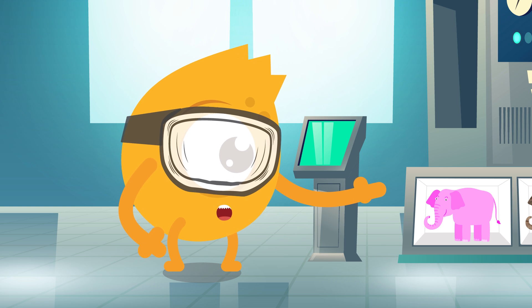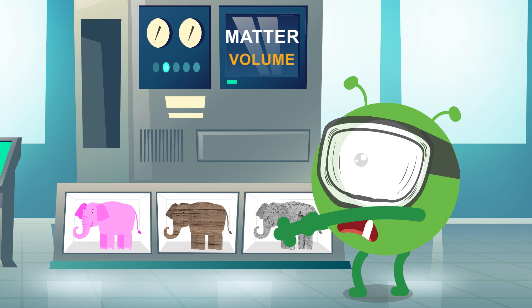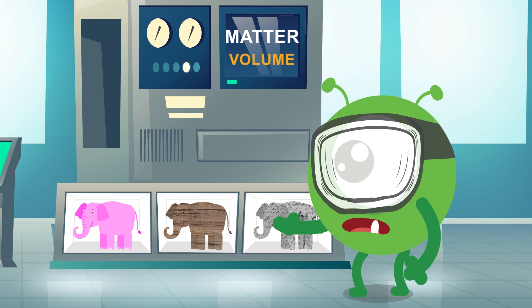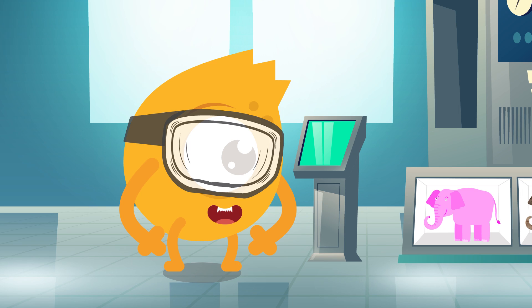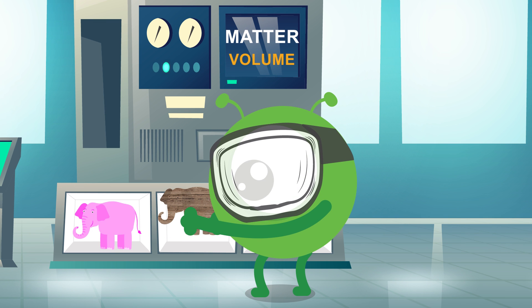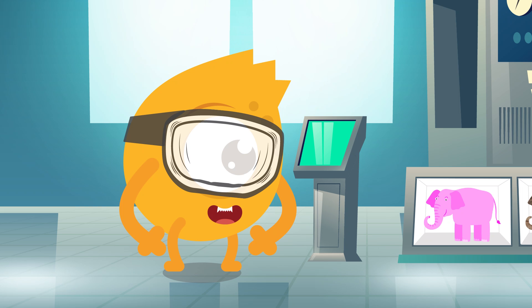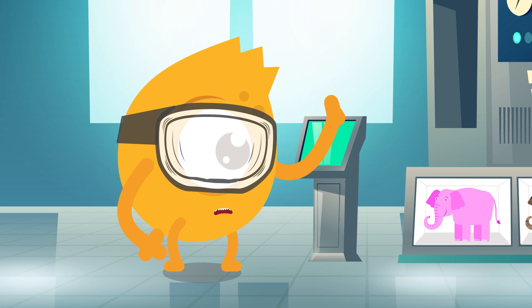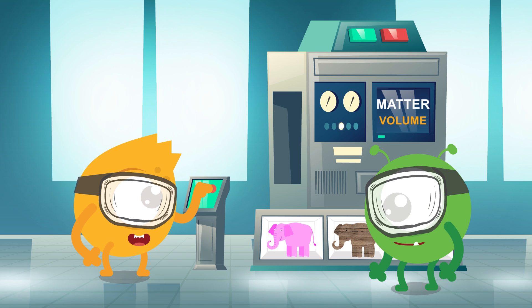But try to move them! That elephant's not budging! Hey! This elephant is easier to move! Why? Another way to compare objects is by looking at how much matter they have! That's called mass!